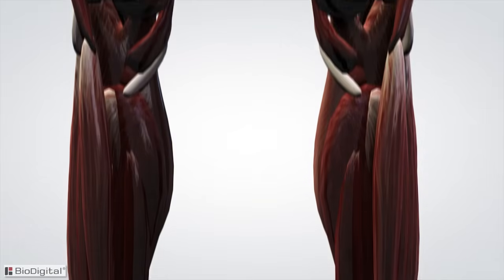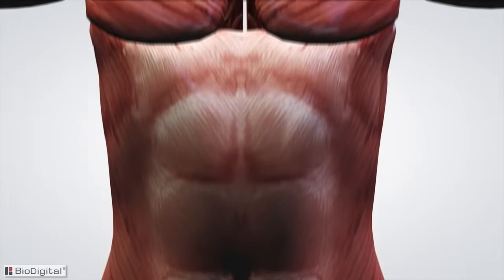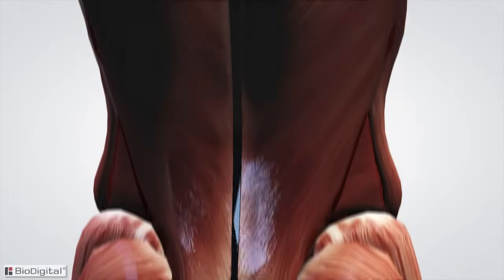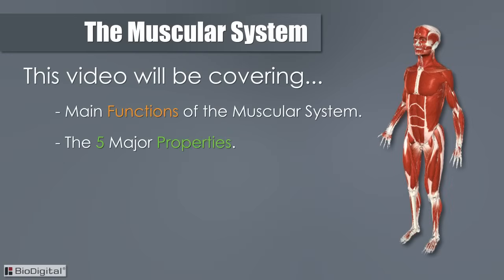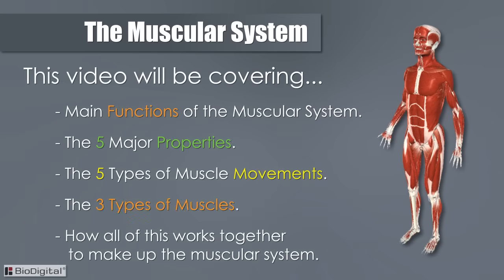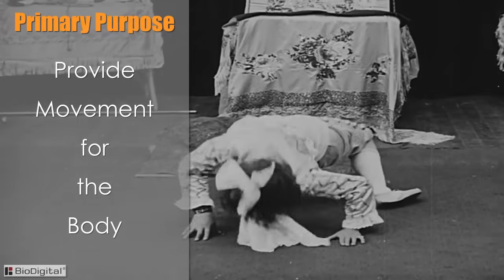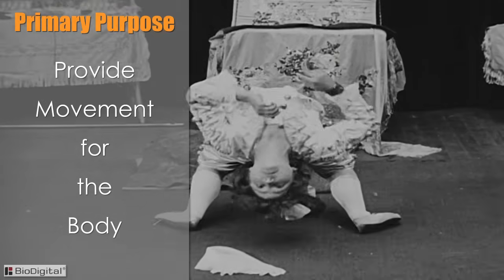The muscular system is made up of over 600 muscles. While we won't be covering all 600 individual muscles in this overview video, we will be discussing the main functions of the muscular system, the five major properties, the five types of muscle movements, three types of muscles, and how all of this works together. The primary purpose of the muscular system is to provide movement for the body.